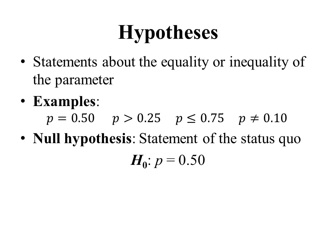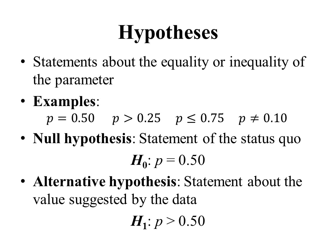In this case, we have two types of students: in-state or out-of-state. Without any evidence, we might think half are in-state and half are out-of-state. So our null hypothesis is the statement that the population proportion p equals one half. The alternative hypothesis is a statement about the value of the parameter suggested by the data. Our data had a sample proportion greater than one half, suggesting the population proportion is also greater than one half — so the alternative hypothesis is p is greater than one half. Every hypothesis test has a null hypothesis denoted H-sub-0 and an alternative denoted H-sub-1.